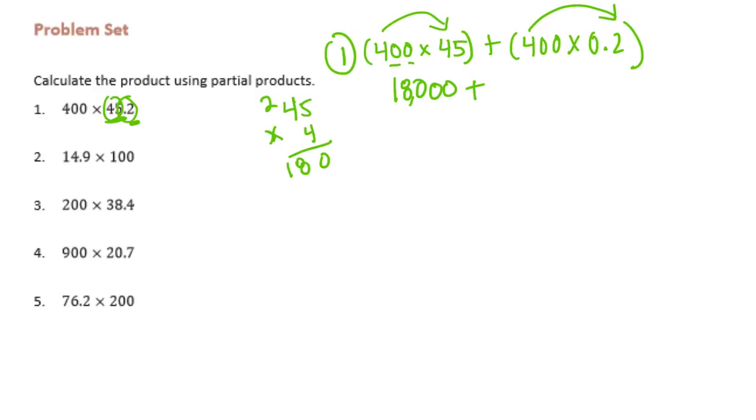Plus we can do 4 times 2. I'll worry about the decimal in a minute. It's 8 with 2 zeros, but since this is 0.2, we need to move the decimal point over one place, so it's actually 80. So 18,000 plus 80 would be 18,080.